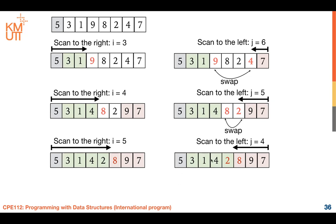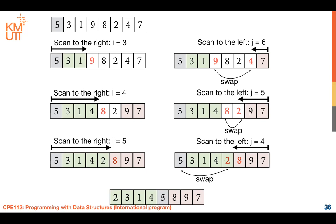Now we have the green list (less than five) and the pink list (greater than five). We swap the element at position j with the pivot. So five swaps with two — now five is in the correct position, marked gray as the middle. Then we perform QuickSort on the green group and QuickSort on the pink group. This is how the QuickSort algorithm works.